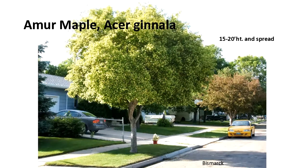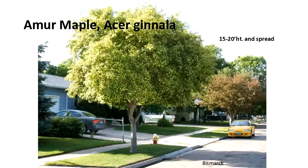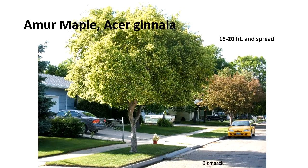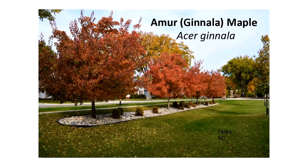Amur maple is not generally thought of as a flowering tree, but as you can see in the photo, those yellowish clusters are flowers — they flower fairly heavily in the spring. Most have been seedling propagated to date. They're used in landscapes and conservation plantings, are very pH tolerant, and grow 15 to 20 feet in height with a 15 to 20 foot spread. They can be grown as single stem or multi-stem and provide great fall color.